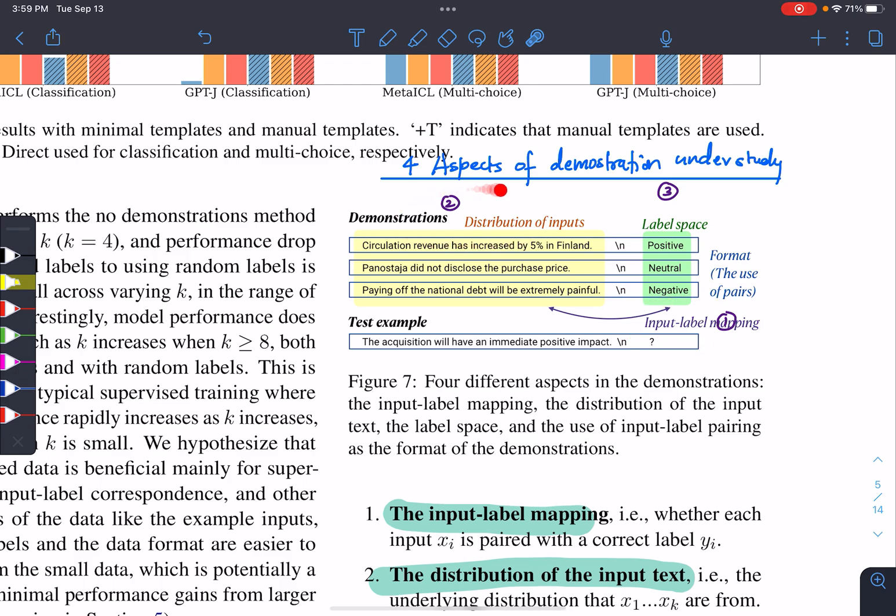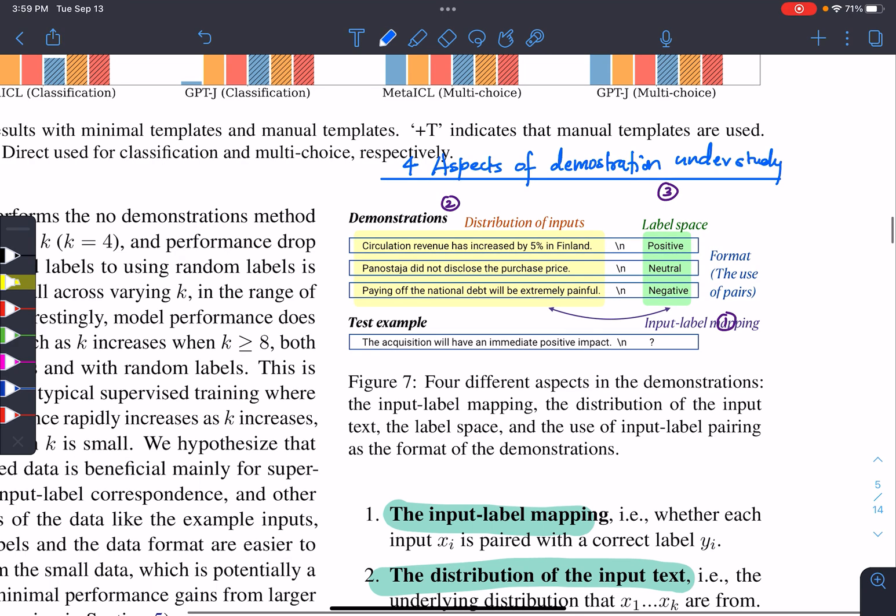Second is the distribution of input, how we should provide the X. And then the third is label space. What should be the constituents of the label space? And fourth is the format, whether we should be giving only input or only label, or should we have to give the input pair?